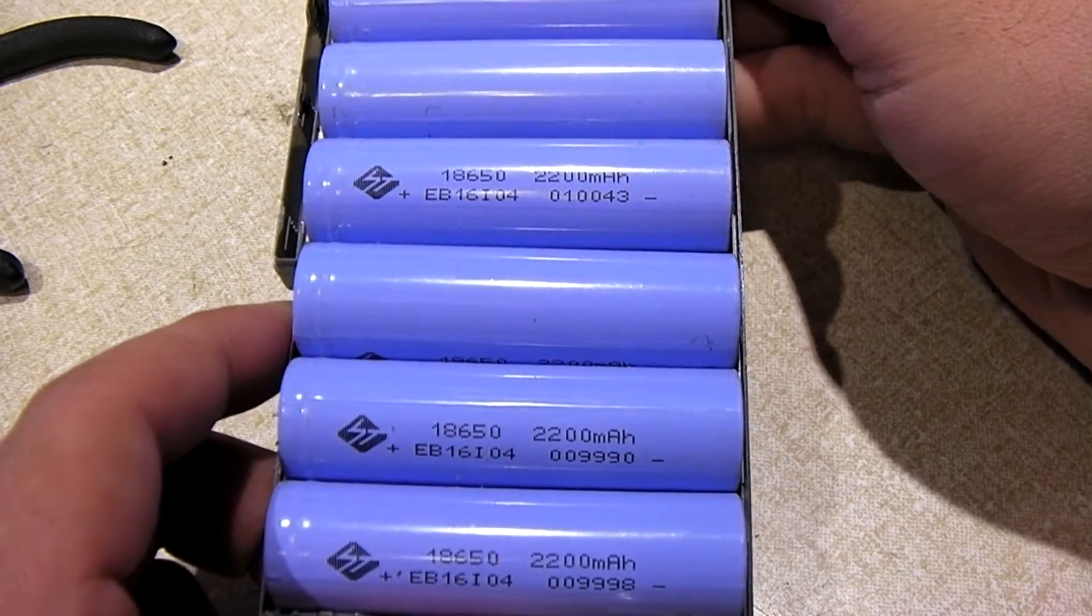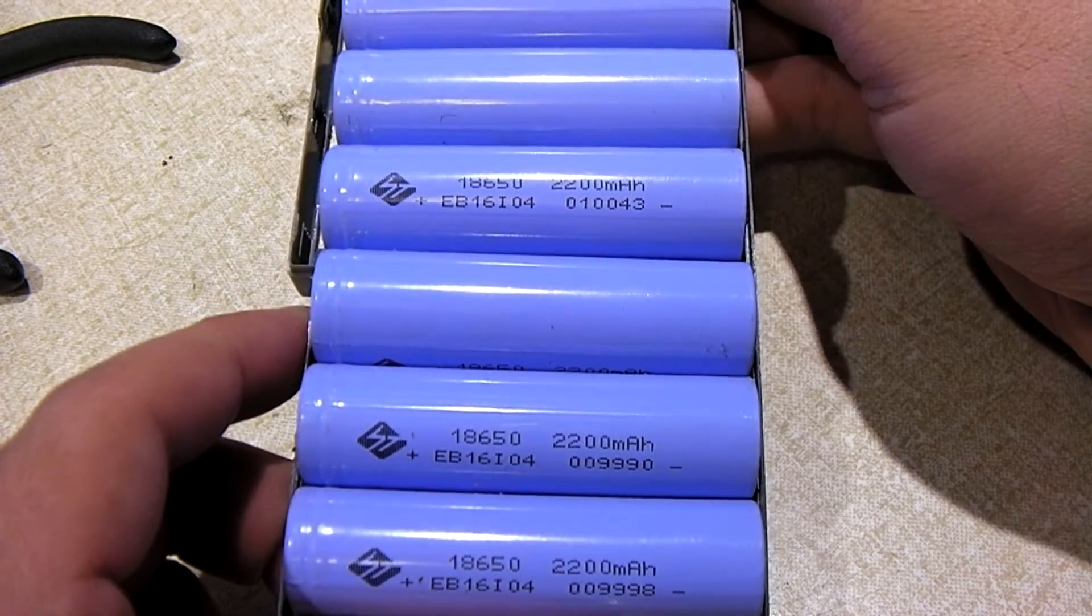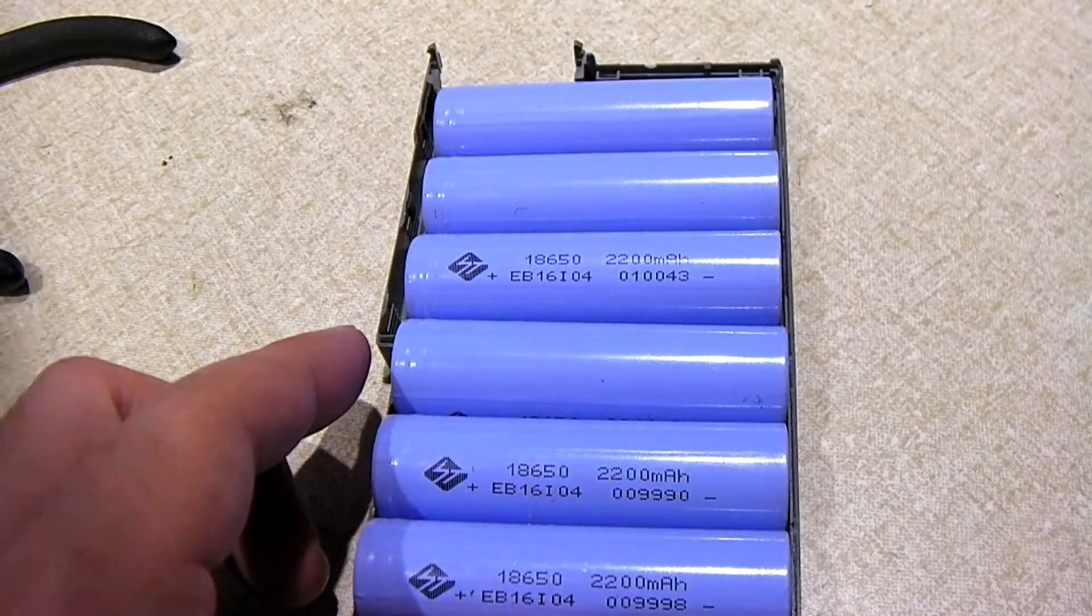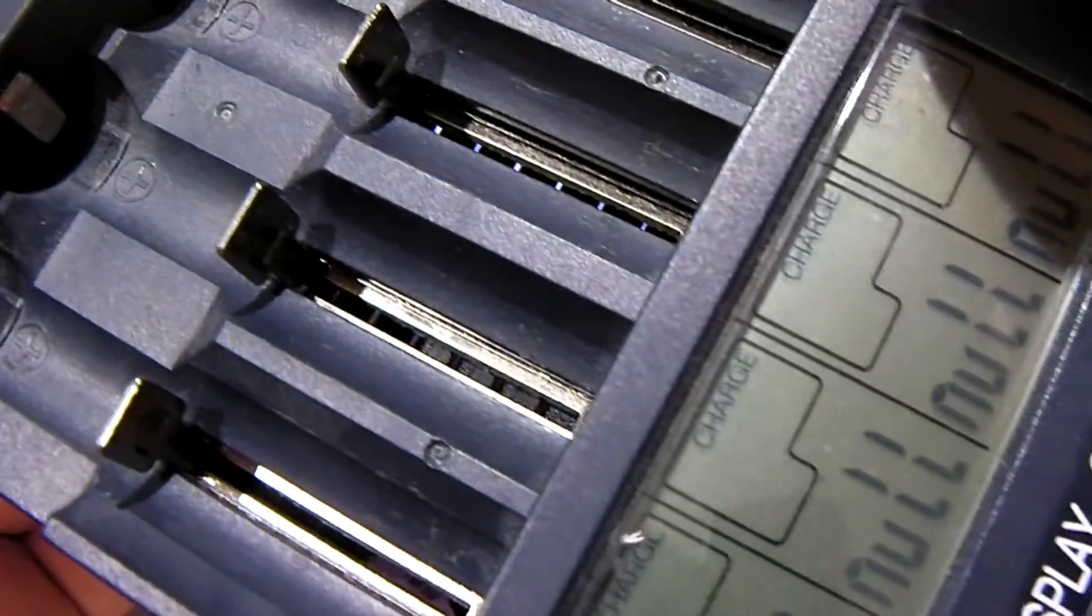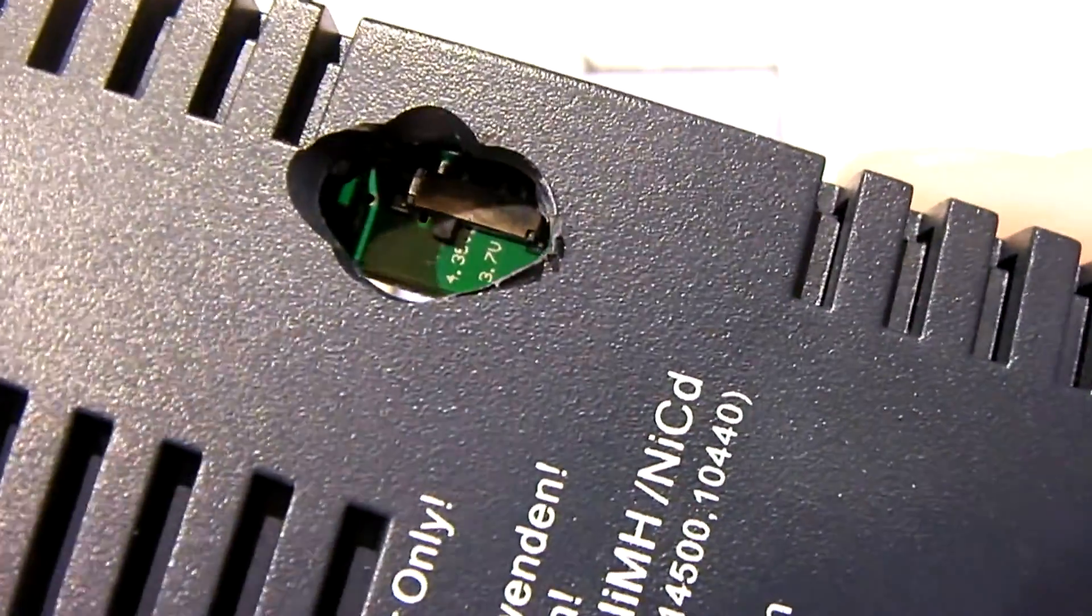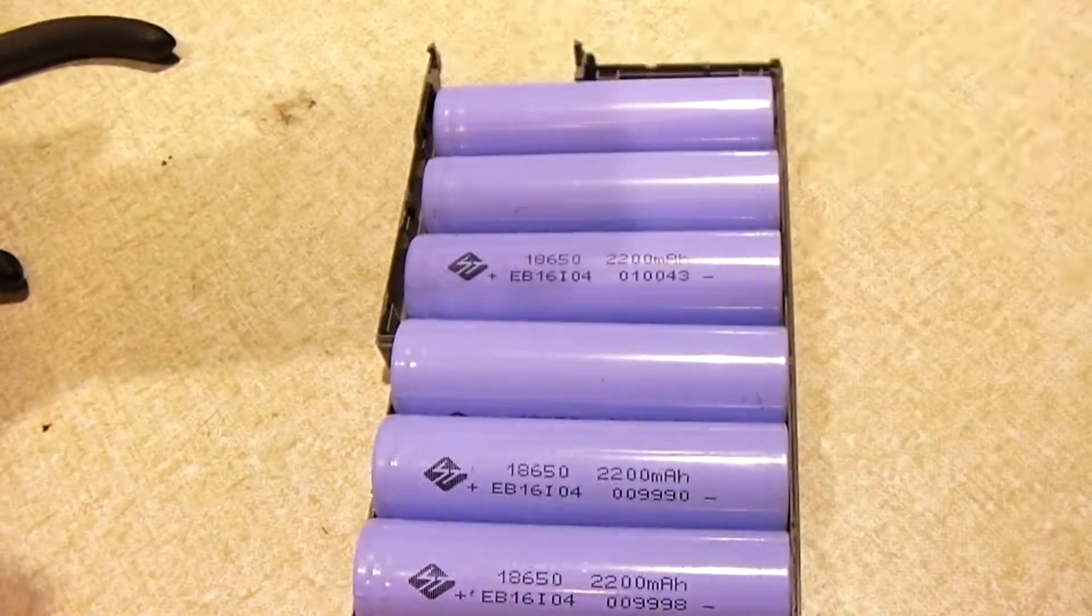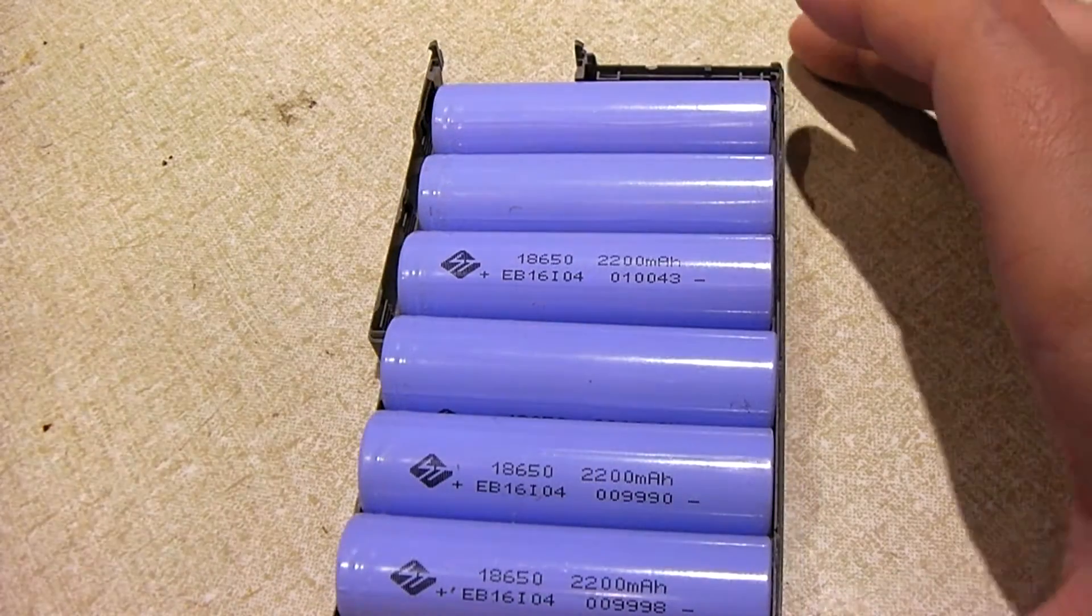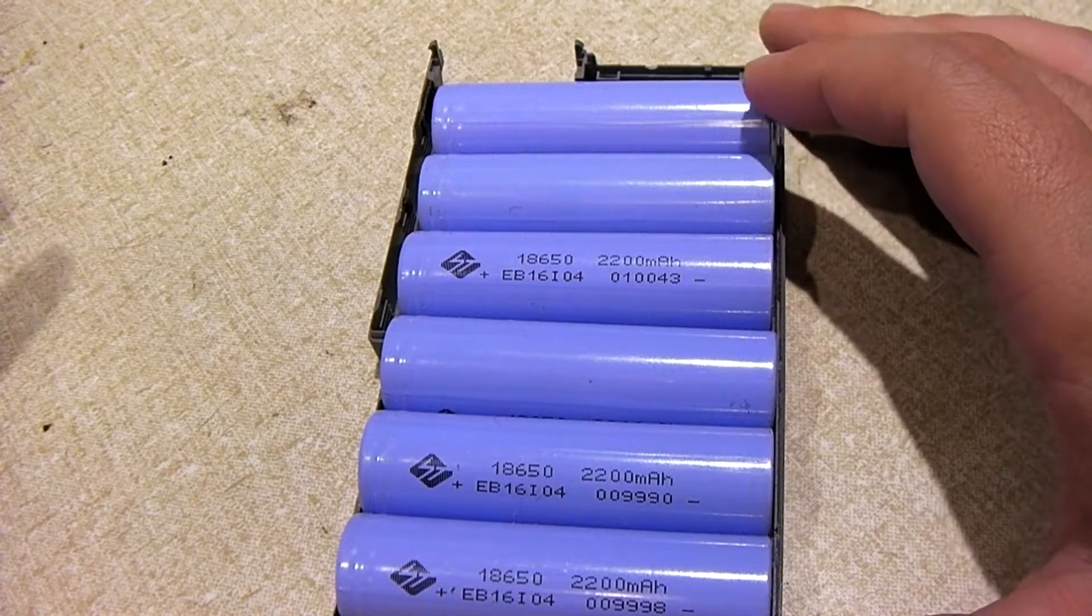What I'm going to do is pop them in my Opus BT-C3400 charger. I've had this charger for about three years now and it's been a workhorse, I must say. I've modded it to accept 4.35 volt cells. These cells here are standard 4.2 volt cells. According to the labels, they're rated for 2200 mAh.